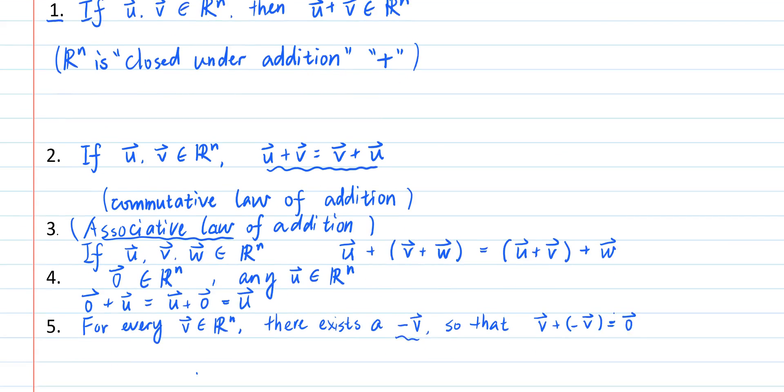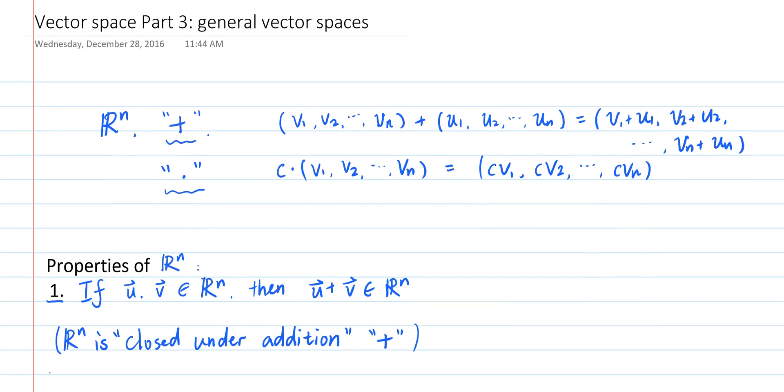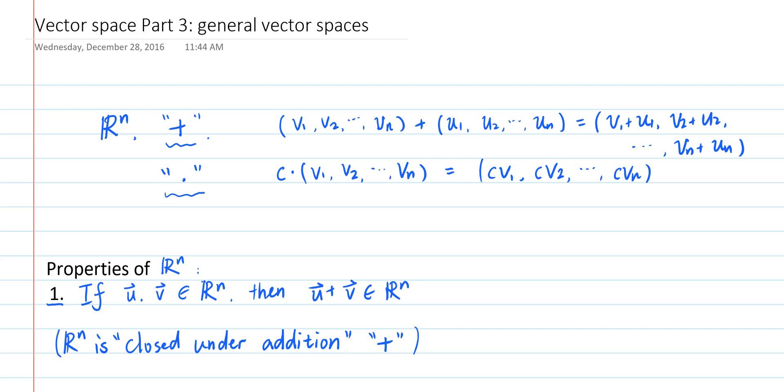In a previous video, we summarized 10 properties of the Euclidean space R^n, where addition and scalar multiplication are defined component-wise. In this video, we're going to use these 10 properties to define a vector space.